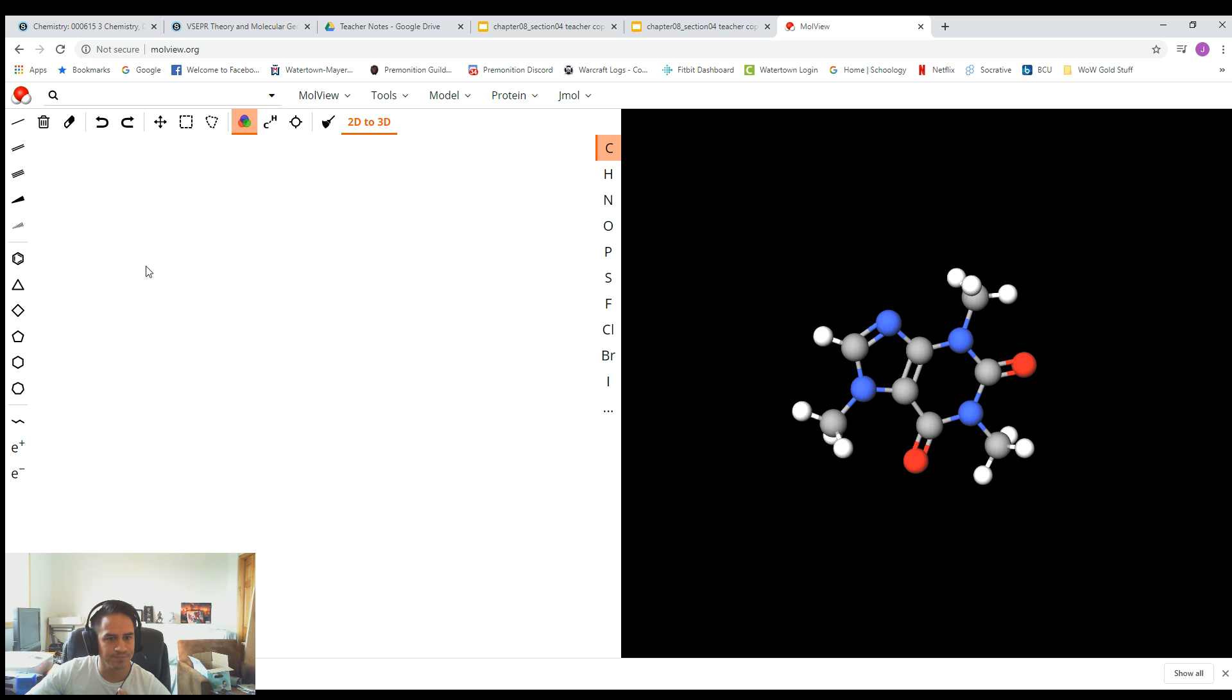So we're going to select Carbon. Click on Carbon. Just click on it on the screen. It'll put a Carbon there. If we want to draw, let's say we want to put another Carbon next to it, there's a couple of ways we can do it. We can just click on the Carbon and then drag out from there, and it'll just make it like this.